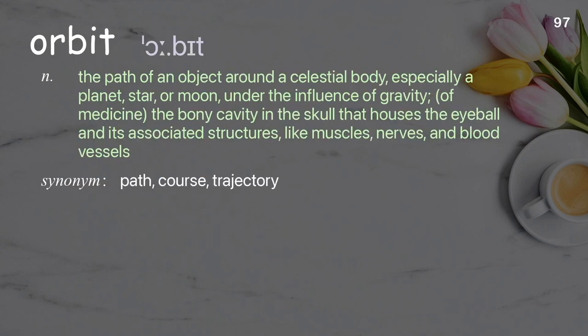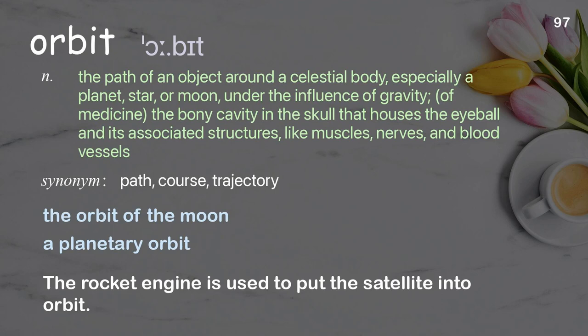Orbit: the path of an object around a celestial body, especially a planet, star, or moon, under the influence of gravity; in medicine, the bony cavity in the skull that houses the eyeball and its associated structures like muscles, nerves, and blood vessels. Examples: the orbit of the moon, a planetary orbit. The rocket engine is used to put the satellite into orbit.